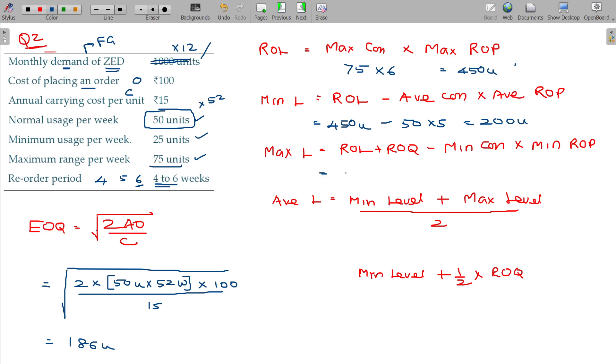Maximum level, reorder level plus reorder quantity, just now we calculated 186 units. Minimum consumption only 25. Minimum reorder period 4 weeks. 100 will be subtracted from here. 536 units.